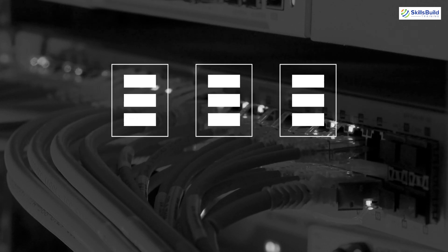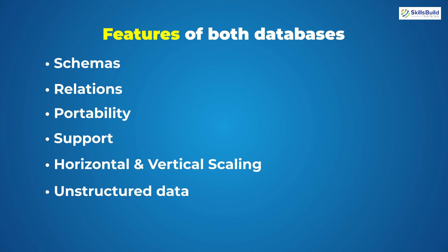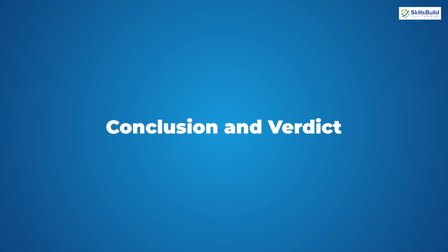Horizontal scaling is not possible in SQL because we cannot distribute data in different places, while in NoSQL both horizontal and vertical scaling are possible. In NoSQL or MongoDB we have unstructured data — no uniformity — while in SQL we have structured data. In terms of response, when deleting, updating, or editing data, SQL is faster than NoSQL. NoSQL works best with read and write requests, but with updates and deletions it does not perform better than SQL.